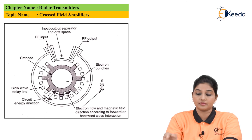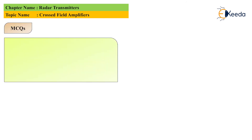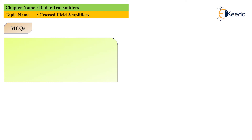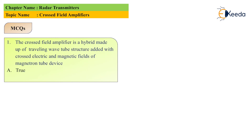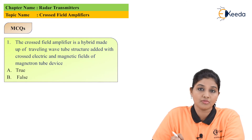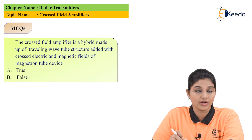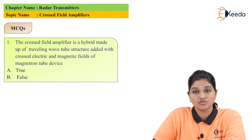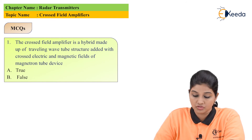The first MCQ question is: 'The cross-field amplifier is a hybrid made up of a travelling wave tube structure added with the cross electric and magnetic field of a magnetron tube device.' The options are true and false. The statement is considered true because in the cross-field amplifier, the electric and magnetic fields are perpendicular to each other and the structure is similar to the magnetron.